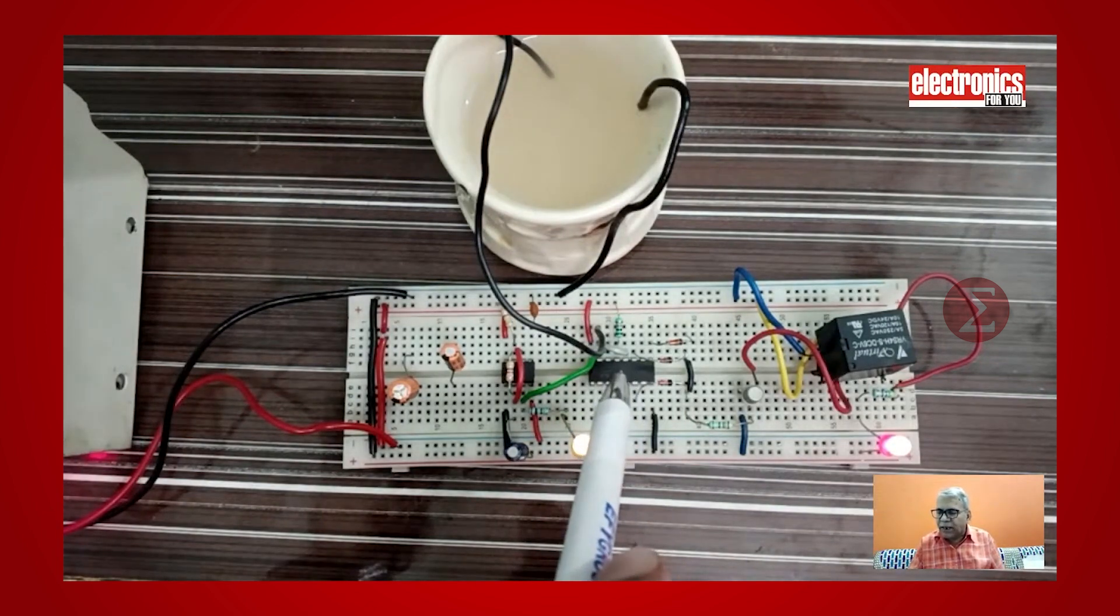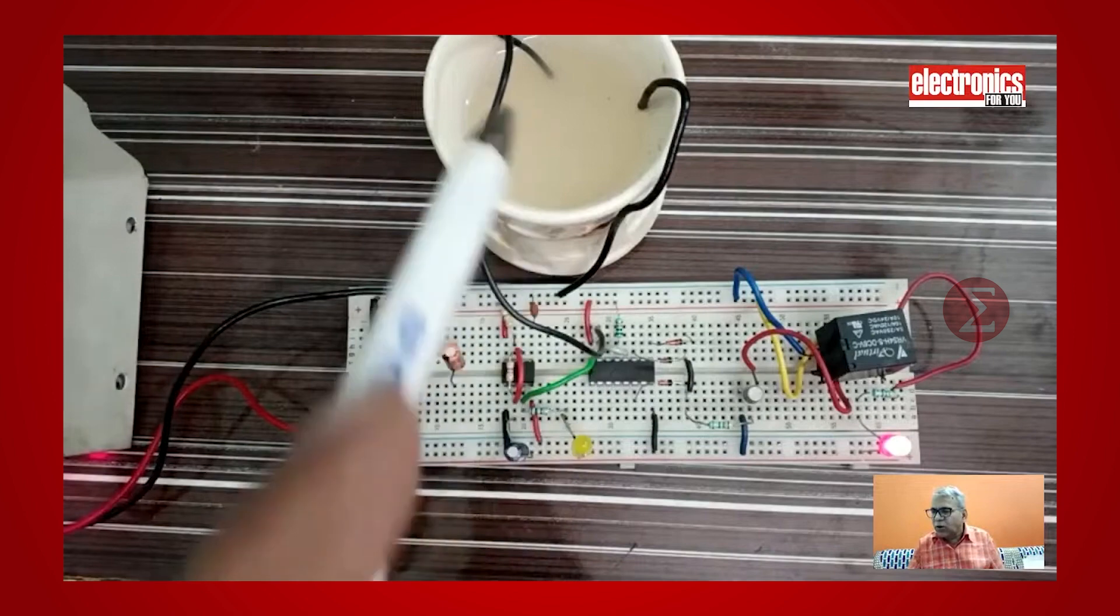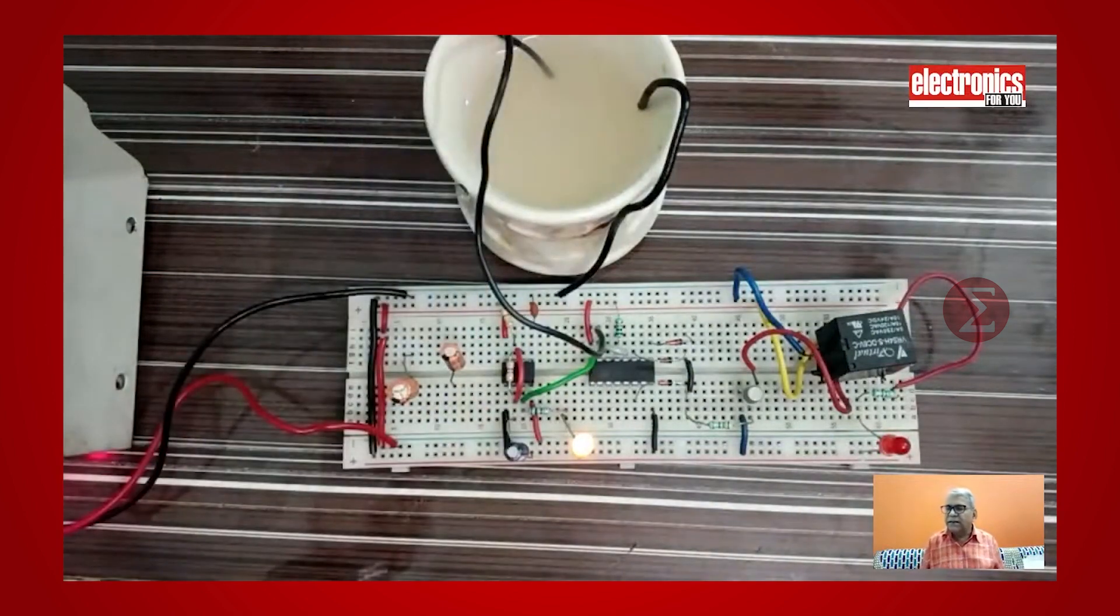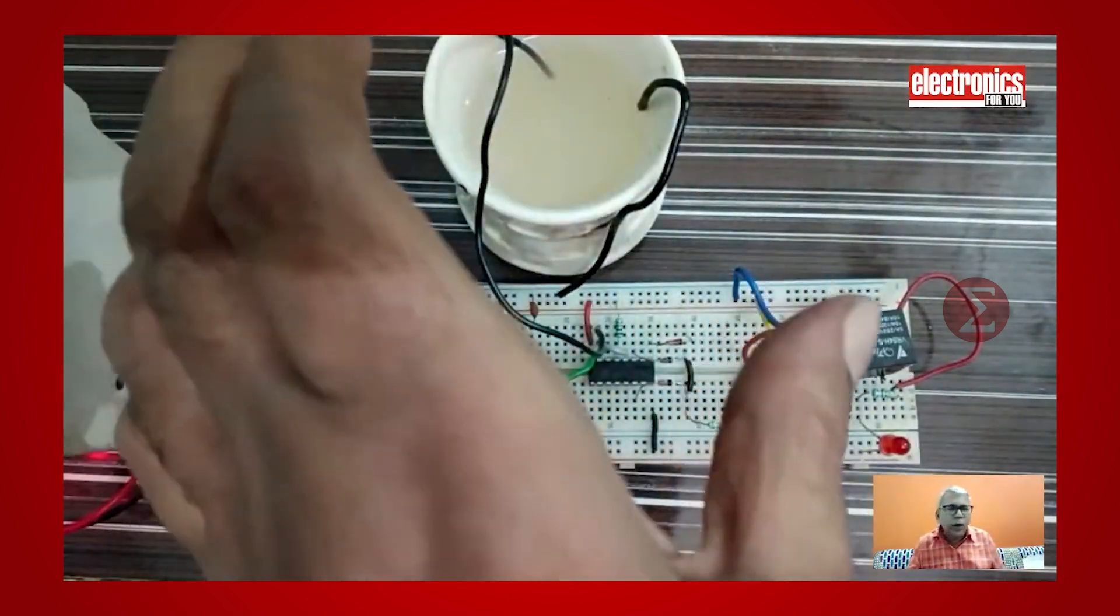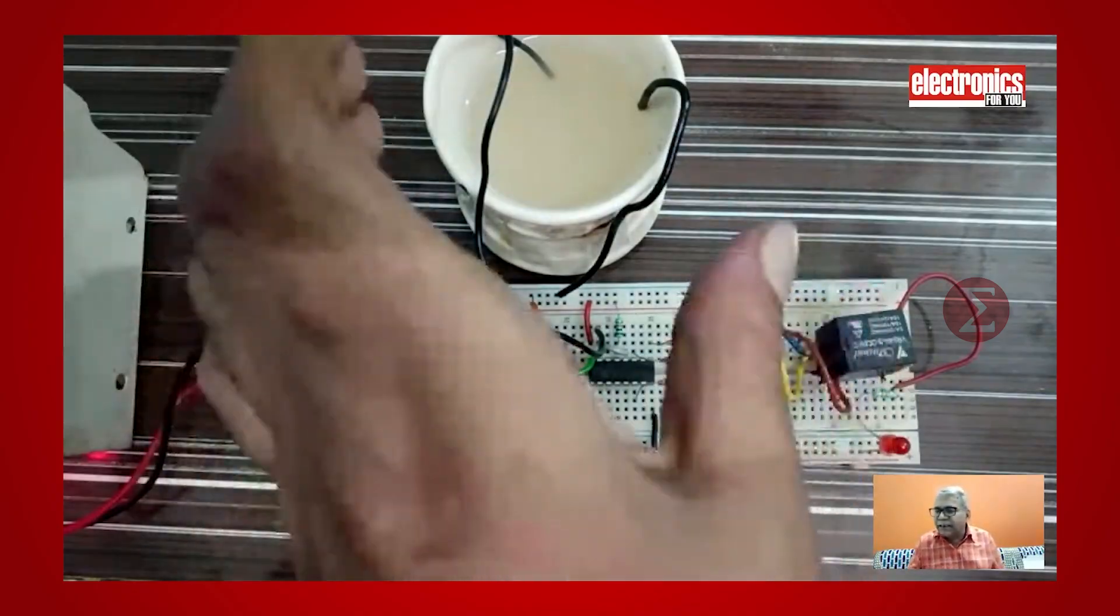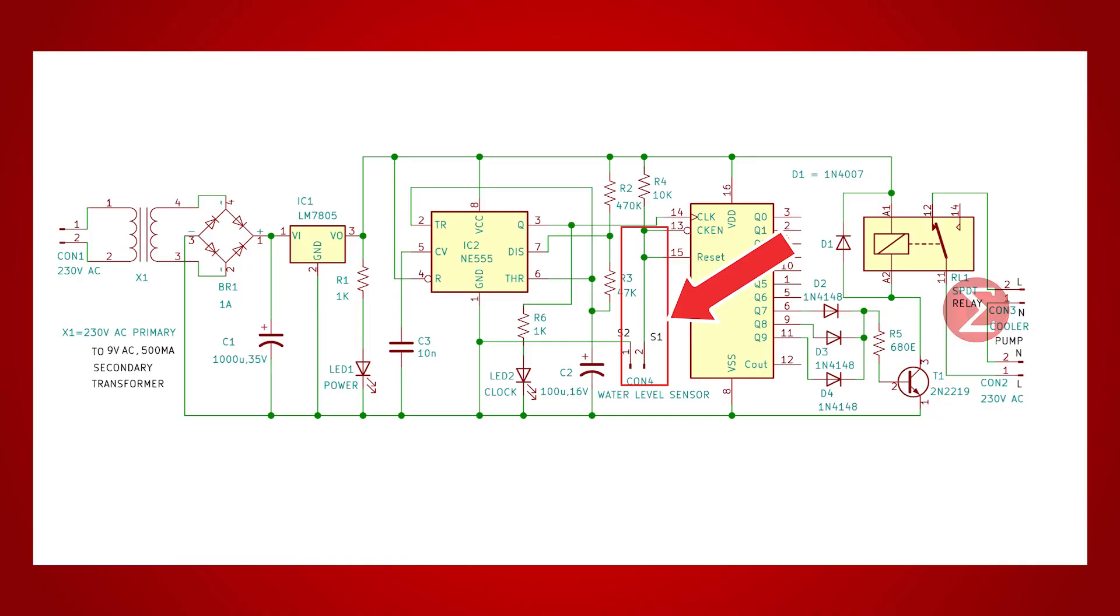Short pin 13 and pin 15 of decade counter and connect this water level sensor to it. Immerse the other end of the wire with metal into the cooler tank. You can see the same in the circuit diagram.